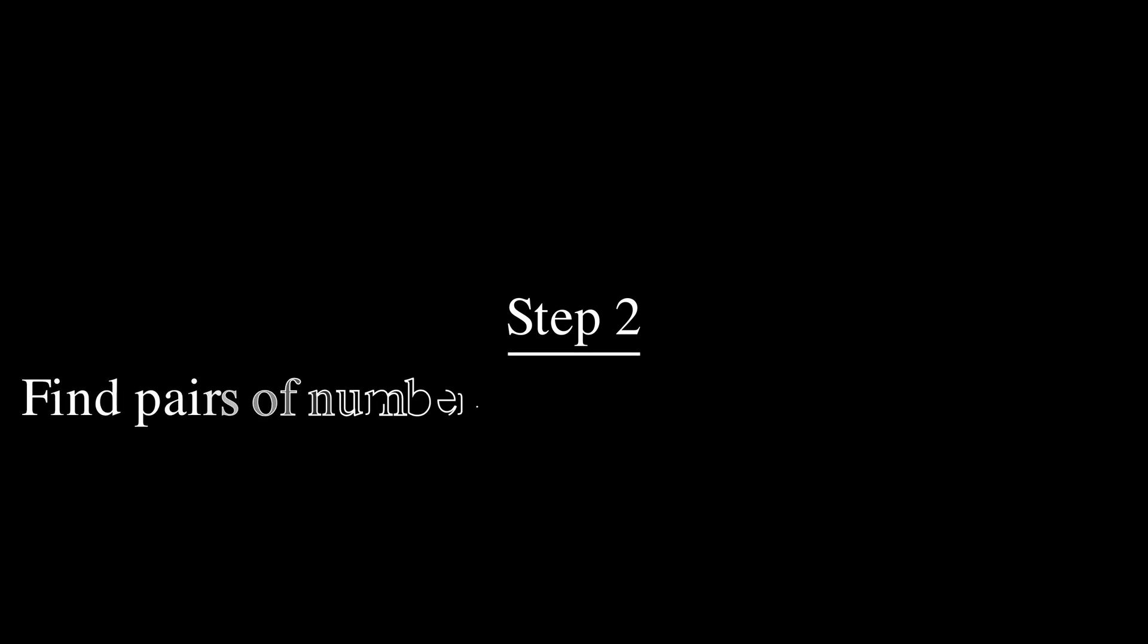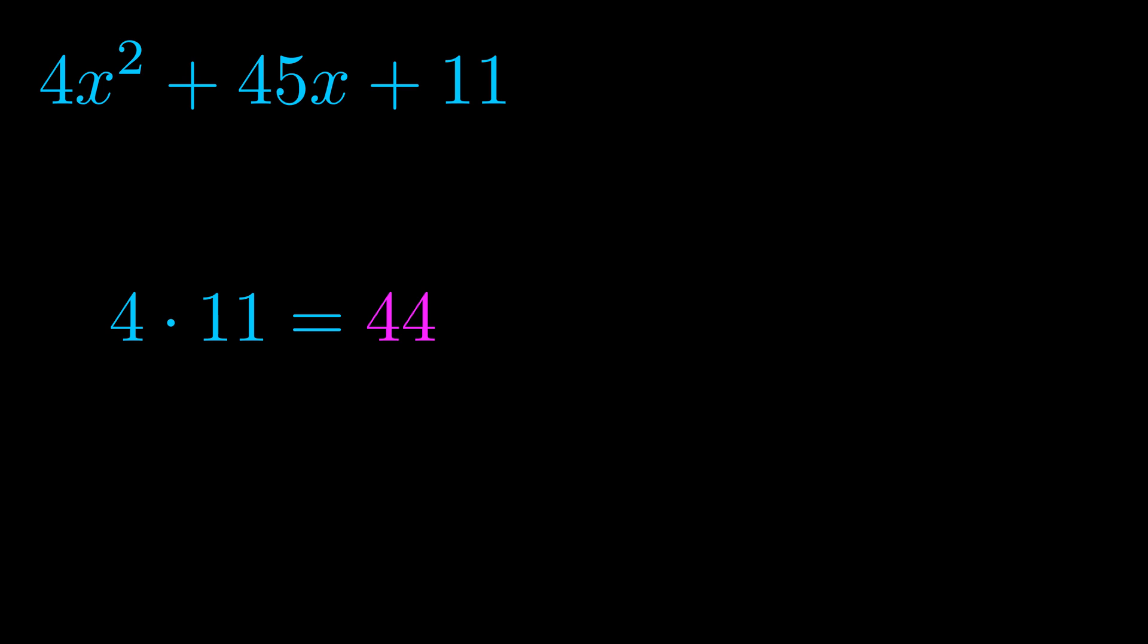Step two is to try to find all of the pairs which multiply to this number. Now it turns out you don't really need to find all of them, but go ahead and write down as many numbers as you can that multiply to the magenta value for now. Pause the video and resume when you're ready to continue.